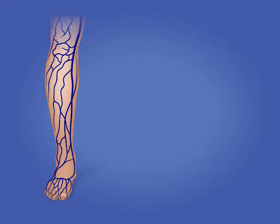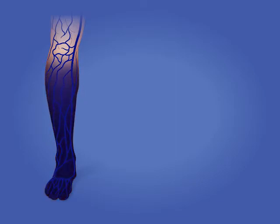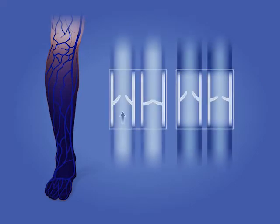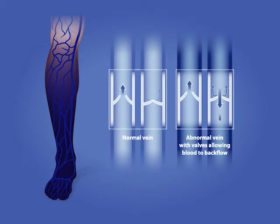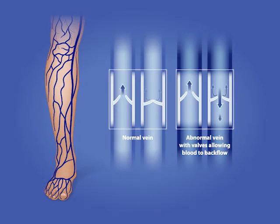Following injury, swelling occurs distal to the injury secondary to venous insufficiency. This is caused in the veins by the one-way valves not closing completely, allowing blood to backfill and pool in the tissues, resulting in edema.